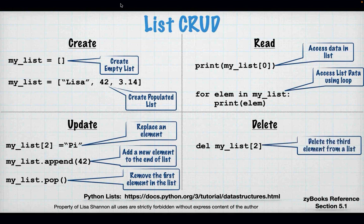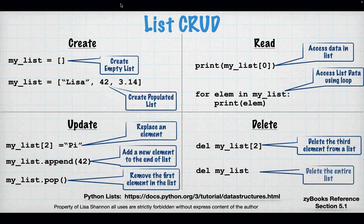Delete: to remove an element from a list there is a new keyword — 'del', which stands for delete. To delete the element at index 2, you say 'del my_list[2]'. To get rid of the whole list, you just say 'del my_list'. That's the handy CRUD chart — create, read, update, and delete — that can be used as a cheat sheet.